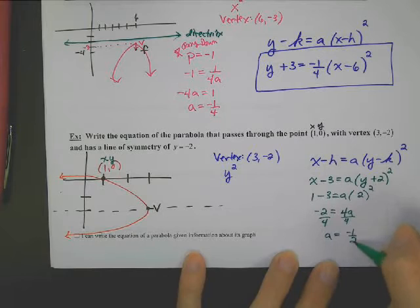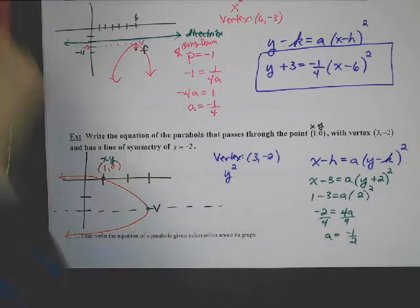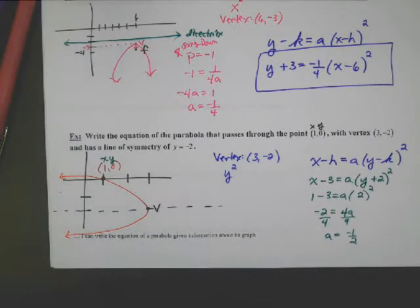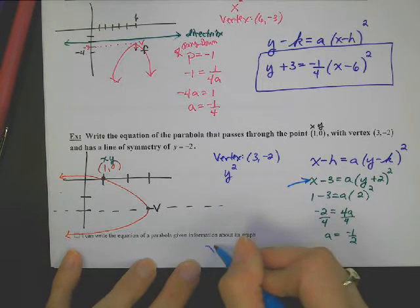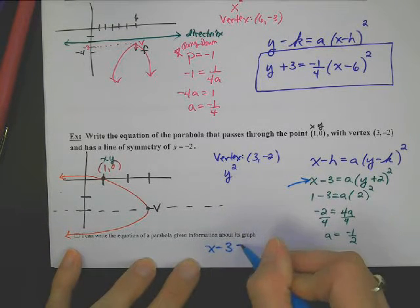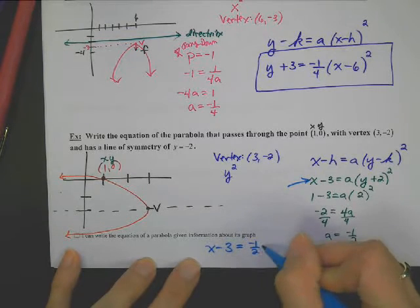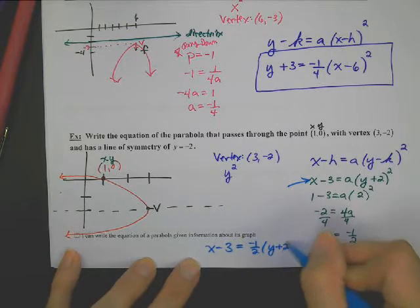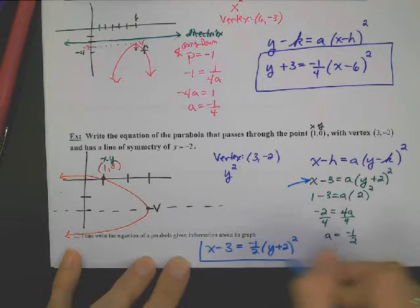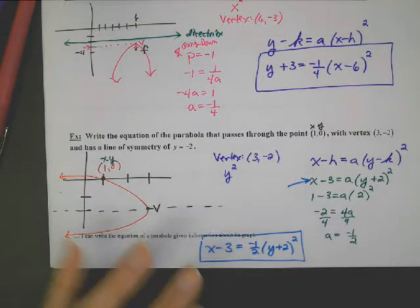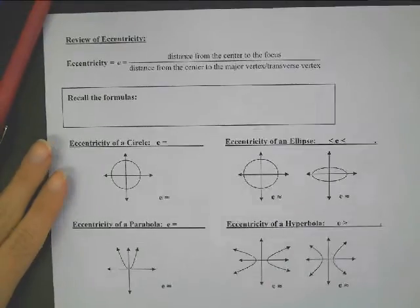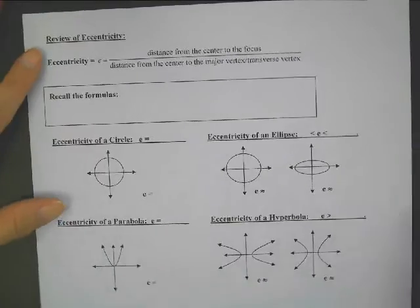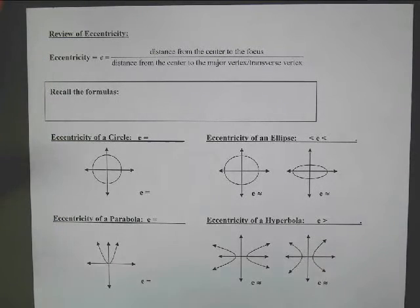Divide by 4 and a is negative 1/2. So we are now ready to write the equation of the parabola. We take this equation and add our a value: x minus 3 equals negative 1/2 times (y plus 2) squared. And that is the equation of the parabola. Okay, the last thing I'm going to teach you is a recap of eccentricity.